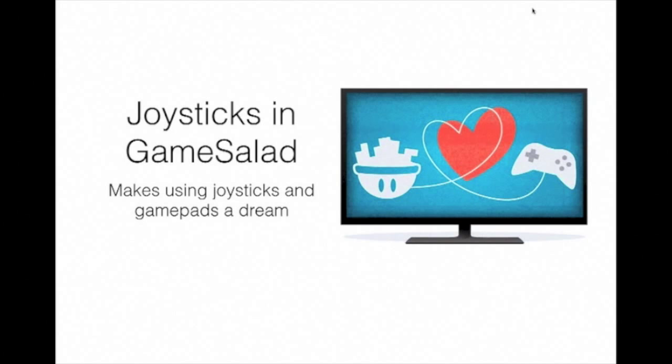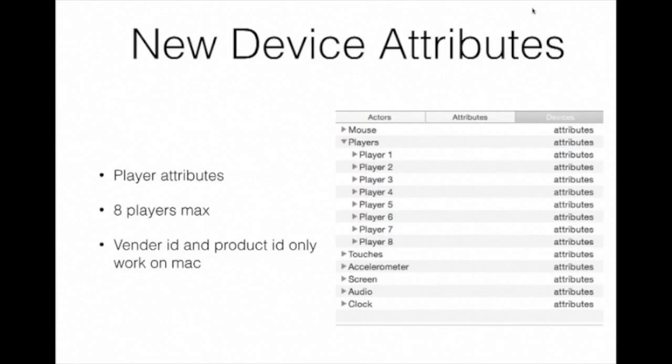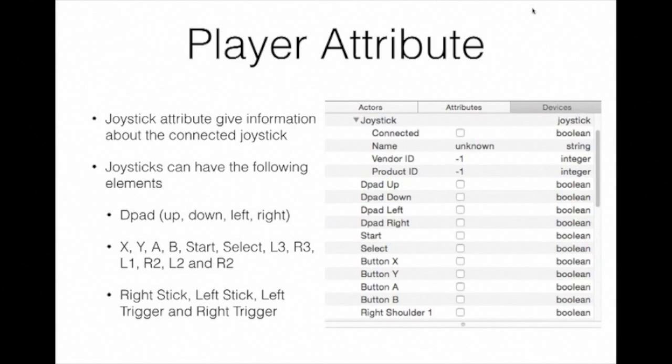We've added new device attributes. There are player attributes supporting up to eight players — as joysticks join, they get assigned to players. Under the player attributes, there are joystick attributes that give you information about the joystick: its name, vendor ID, and product ID, which I mentioned earlier. This currently only works on Mac, unfortunately — Android didn't expose that information until KitKat, and I haven't put in the code to deal with the KitKat issue yet.